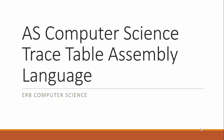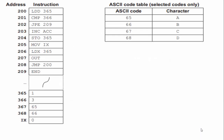In this AS Computer Science video, we're going to take a look at doing a trace table for assembly language. You're going to have something that may look like this — this is from a past exam. We have a set of addresses, a set of instructions, and then these numbers are the address of what the instructions are acting upon.